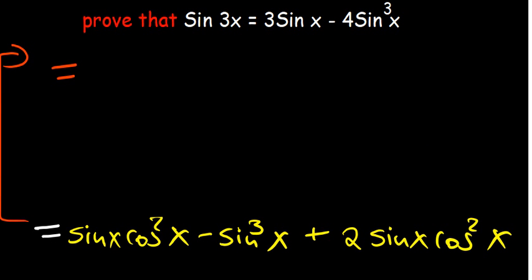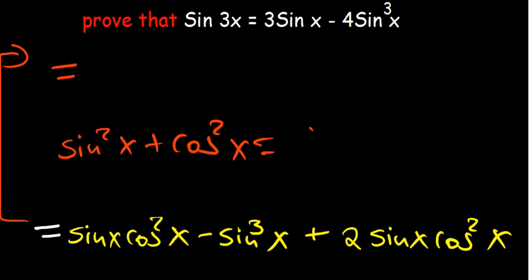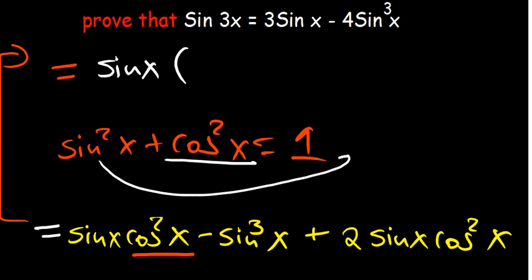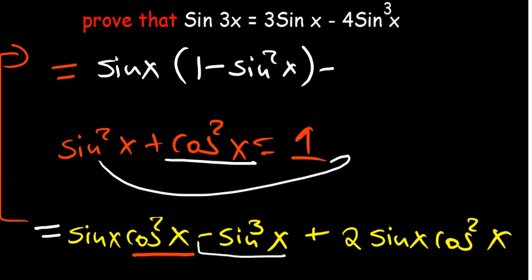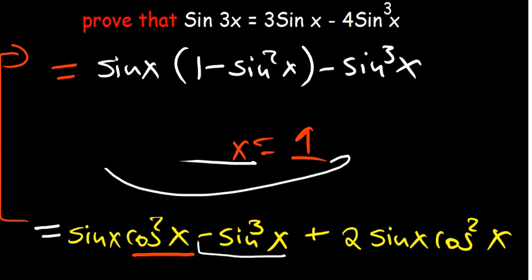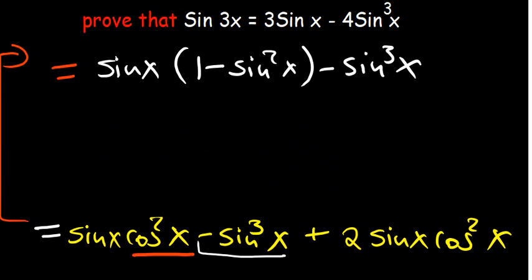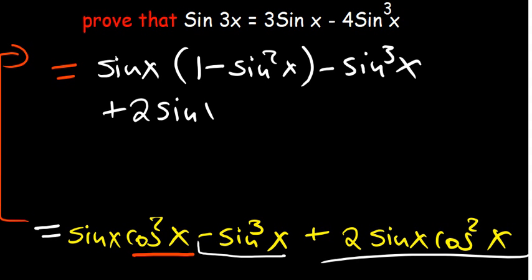We use the Pythagorean identity: sin²(x) + cos²(x) = 1, so cos²(x) = 1 - sin²(x). We substitute this wherever cos²(x) appears. So sin(x)(1 - sin²(x)) - sin³(x) + 2sin(x)(1 - sin²(x)).